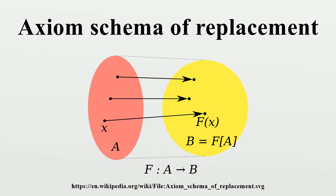Example Applications. The ordinal number ω2 = ω + ω is the first ordinal that cannot be constructed without replacement. The axiom of infinity asserts the existence of the infinite sequence ω = {0, 1, 2, ...} and only this sequence. One would like to define ω2 to be the union of the sequence ω, ω+1, ω+2, ... However, arbitrary classes of ordinals need not be sets. Replacement allows one to replace each finite number n in ω with the corresponding ω+n, and guarantees that this class is a set.